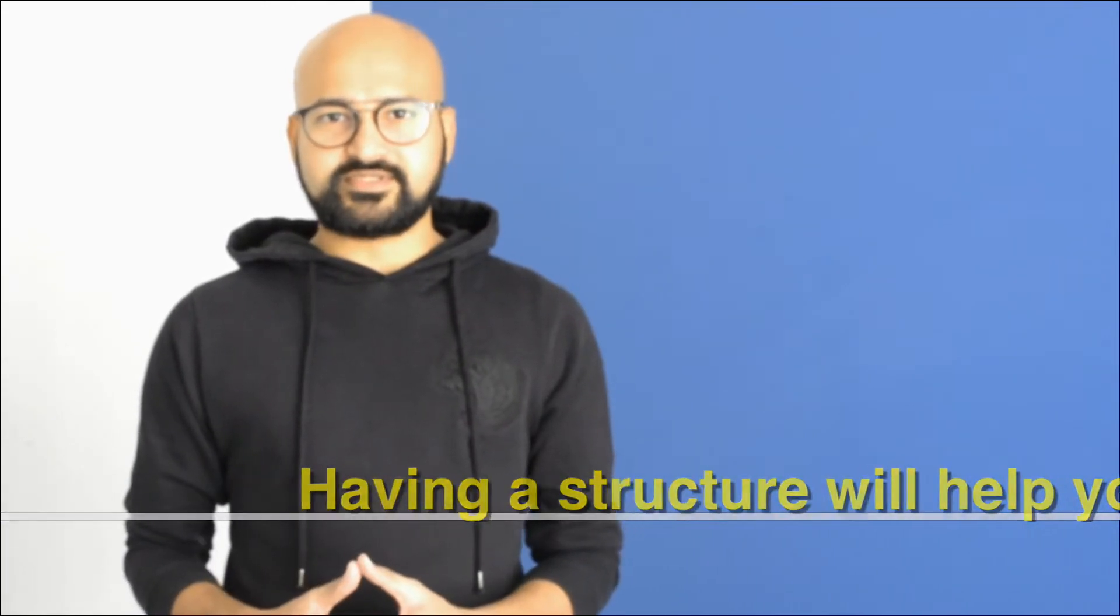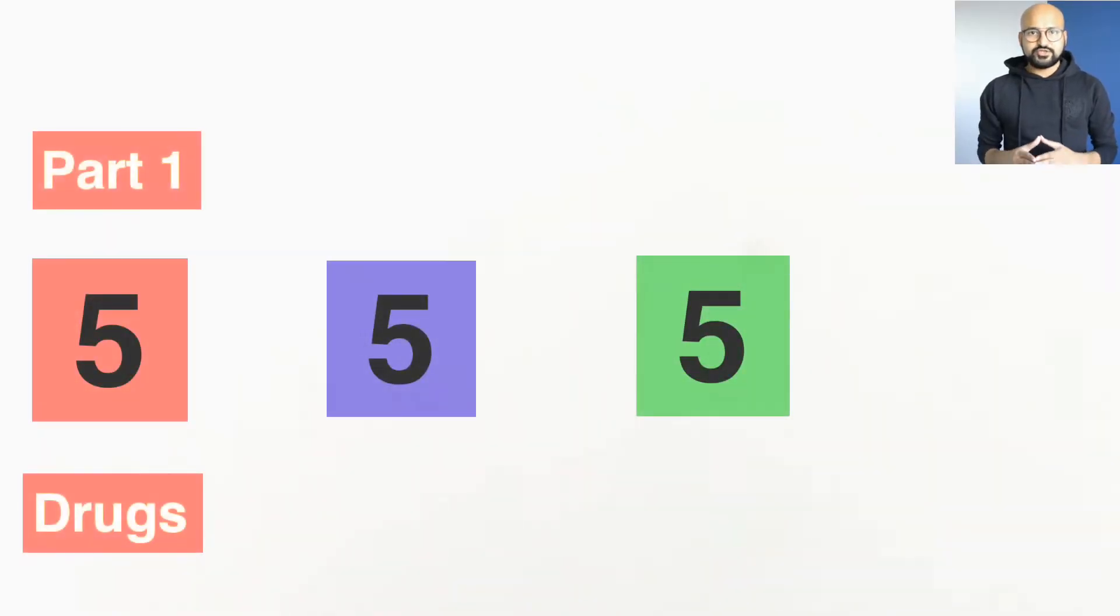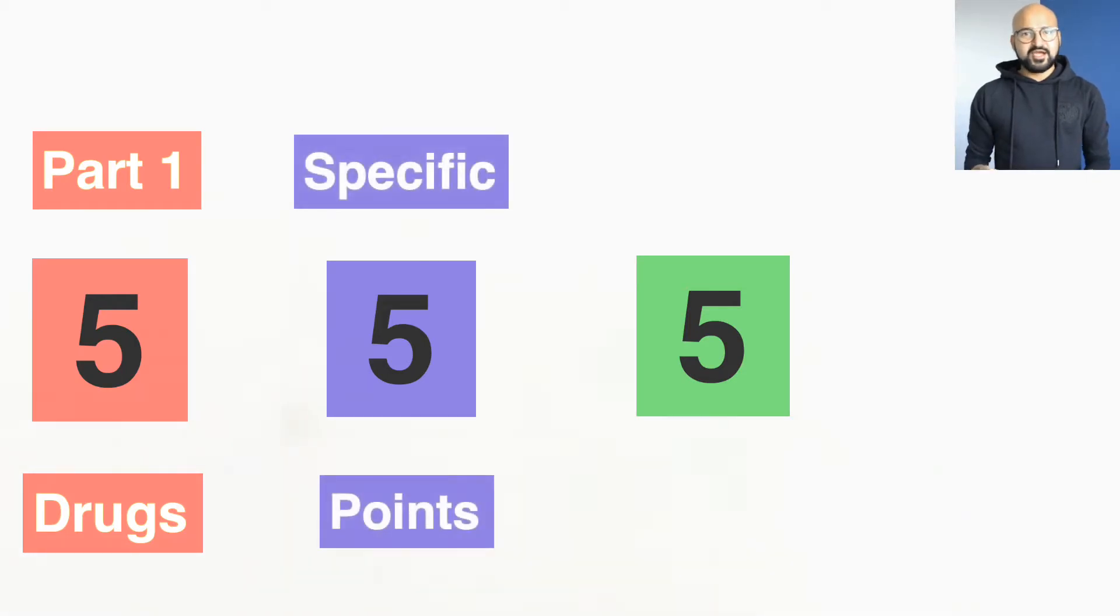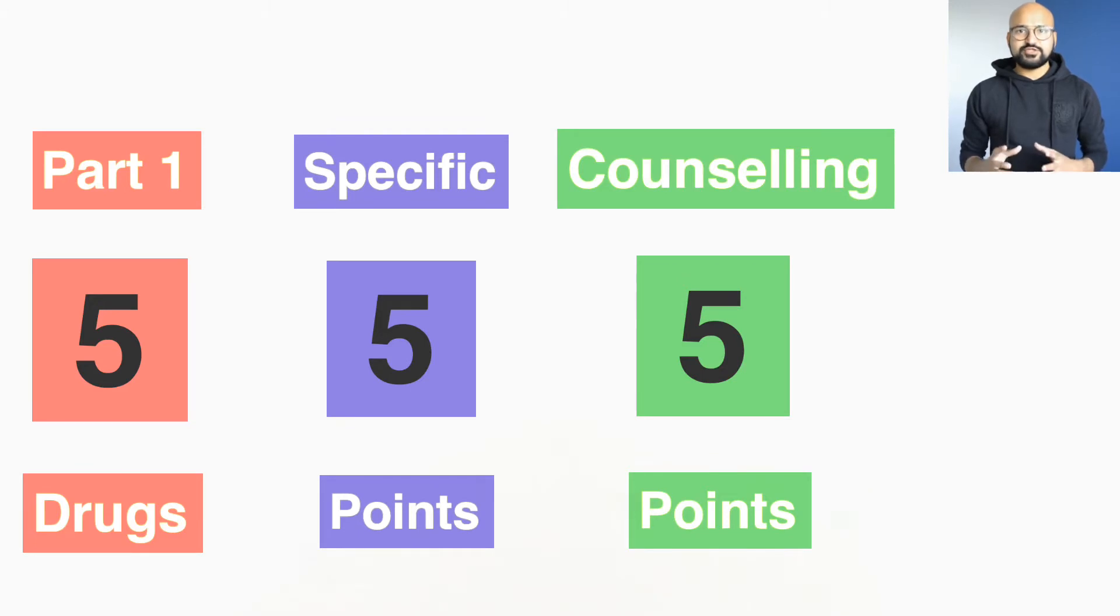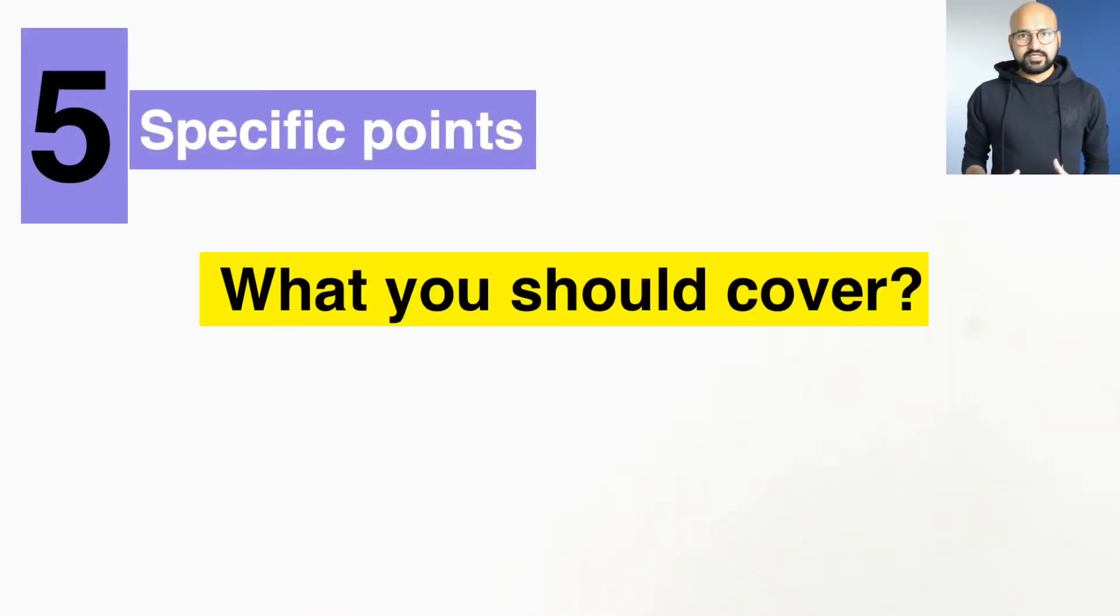Having a structure really helps make your life and your examiner's life easy. So here's the structure formula, and we call it Triple Five. In this formula, the first five stands to remember that you're going to talk about five different drugs in this part of the exam. The second five helps you remember that you're going to say at least five specific points on each drug, and the third five in the formula stands to remember that you're going to say at least five counseling points for each drug. Now I'm going to explain what those five specific points and five counseling points are.